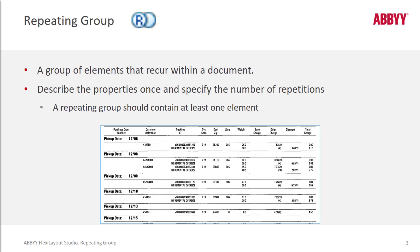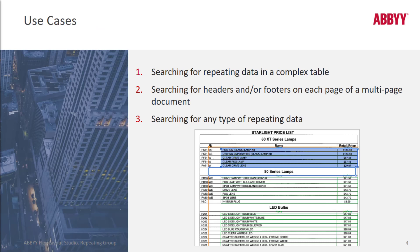A repeating group is very powerful and necessary when you've got data that is separated and repeated. Here we've got table data separated by pickup dates. There are many use cases: explanation of benefit forms, high school or college transcripts, wherever you want to look for data that repeats and it's not in a table format, and also when tables themselves repeat on a single page.